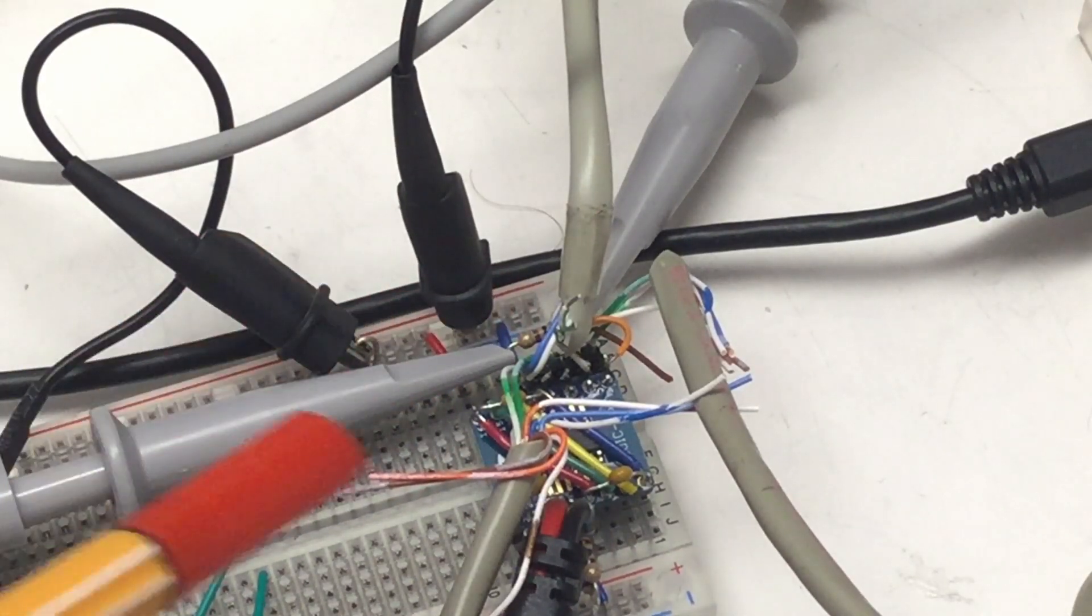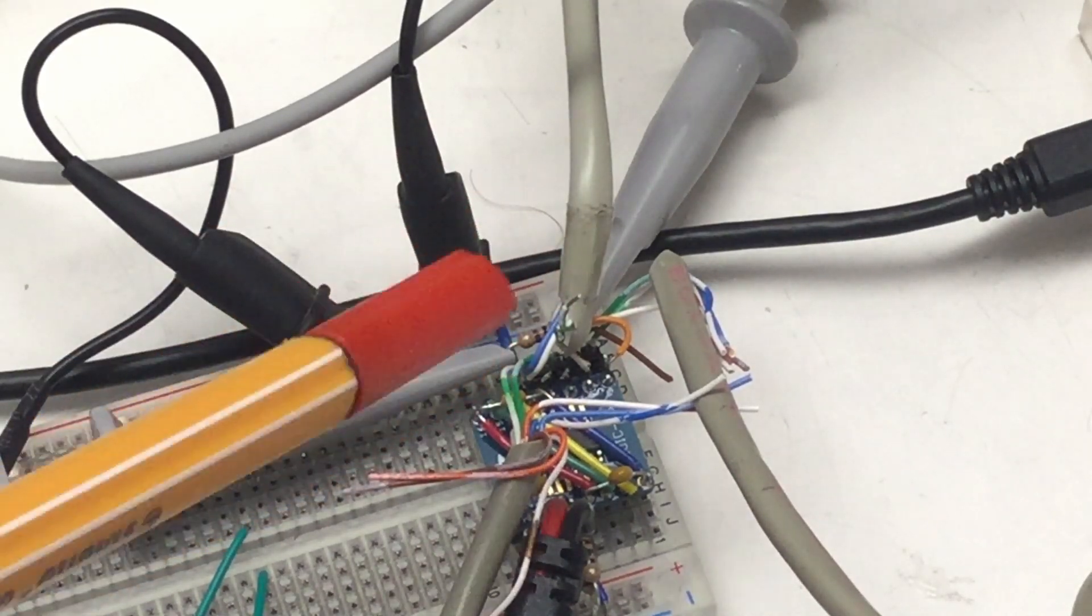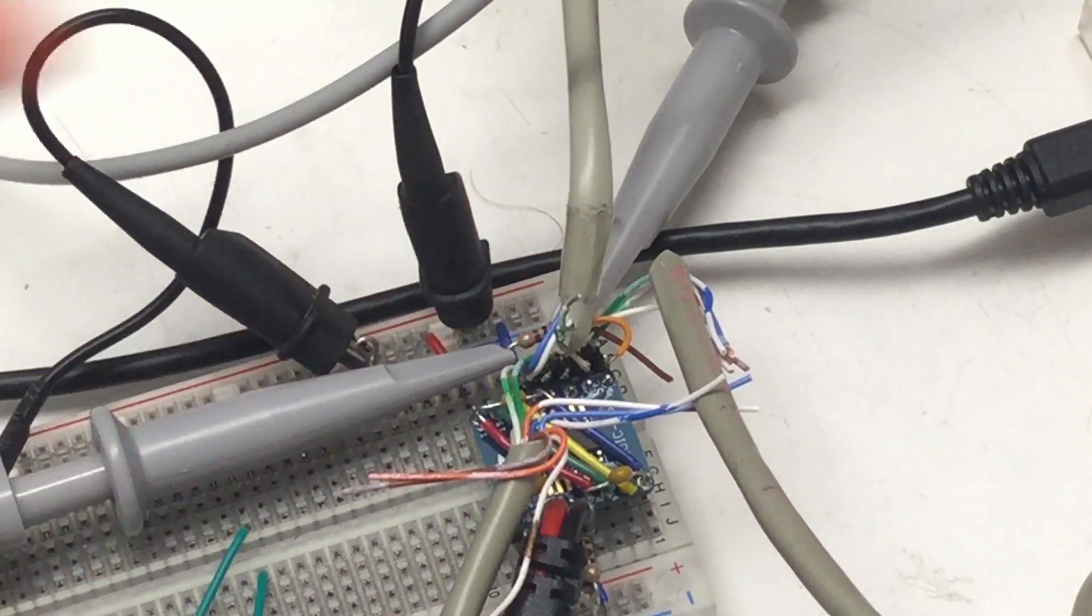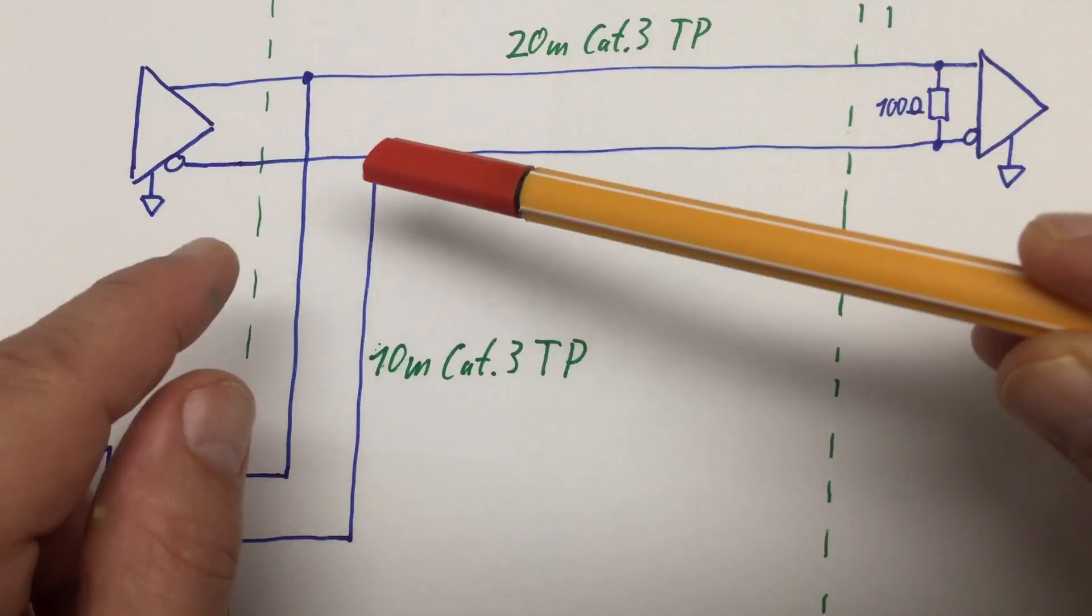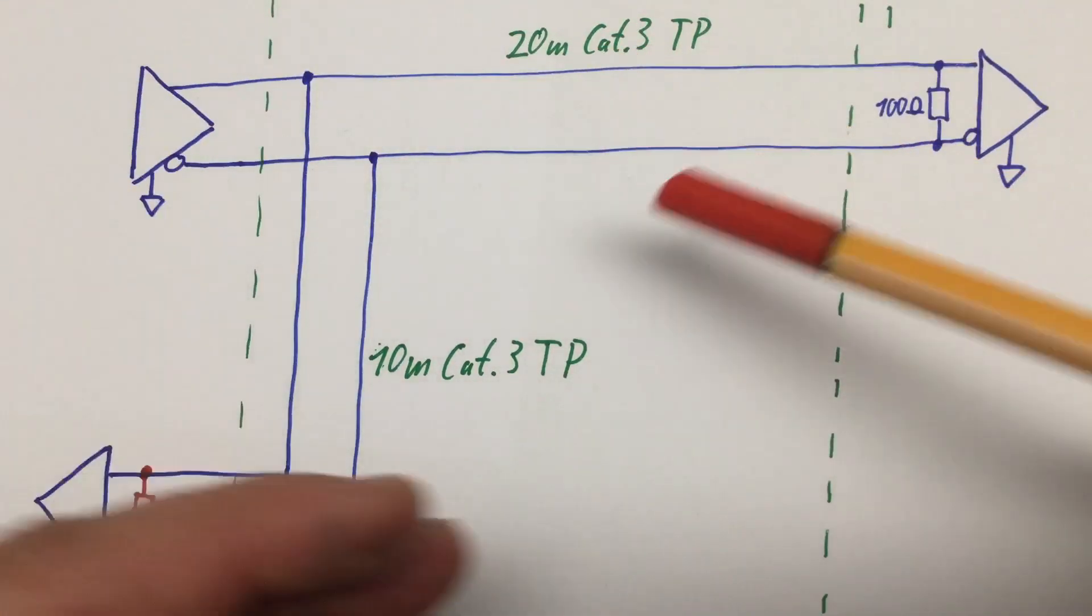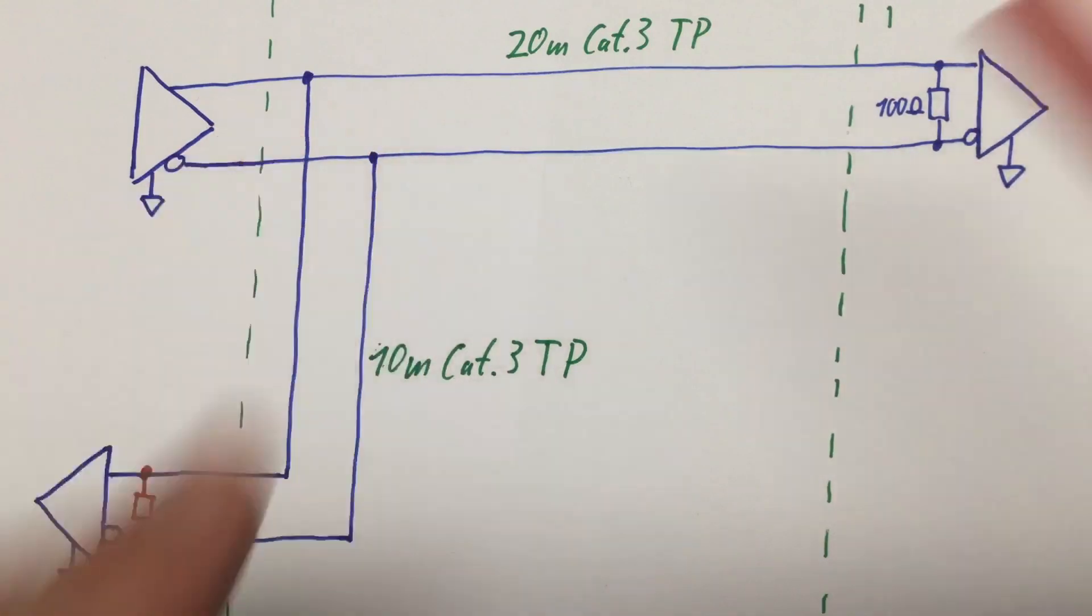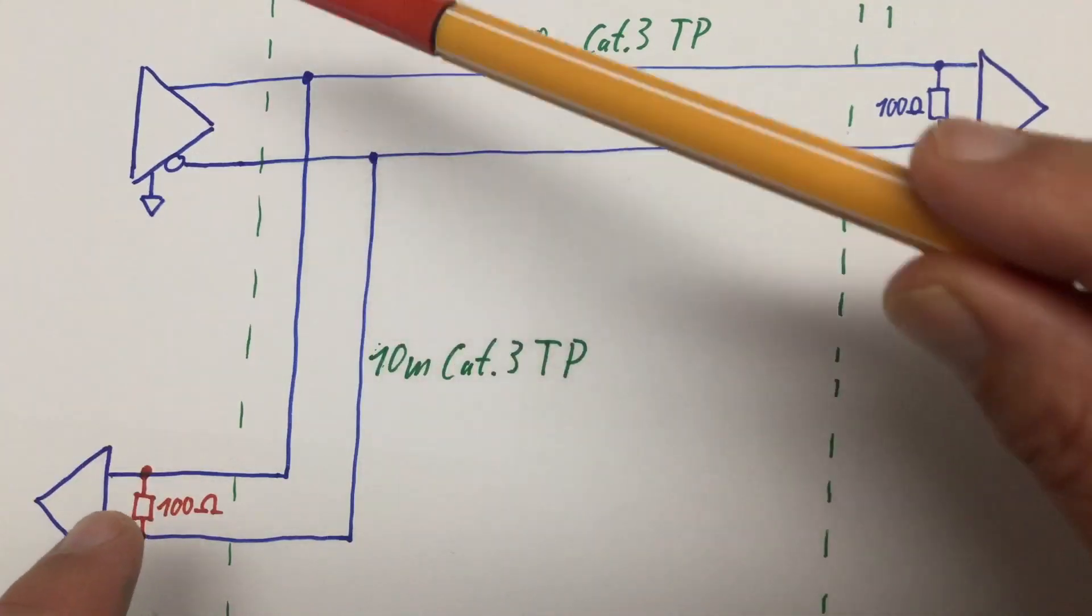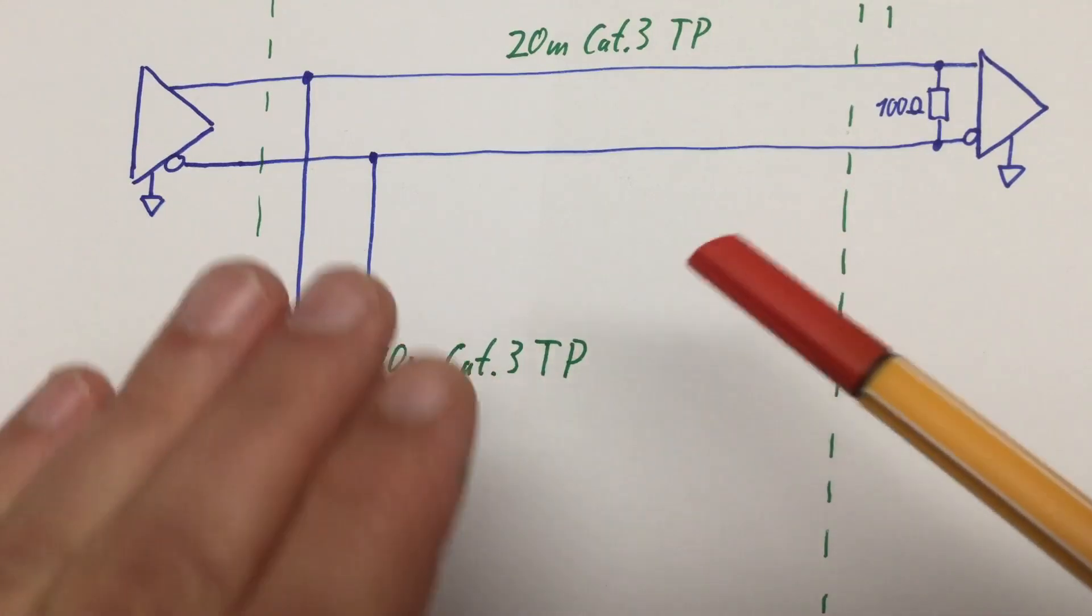But we can alleviate that problem by introducing a second termination resistor in our system here at the end of the transmission line on the left-hand side breadboard. So, obviously, the reflections coming back from here through the 10 meters of twisted pair cable into our system and the other transmission line completely messed up the signal, not only for this receiver, but also for that receiver. And here is a new 100-ohm termination resistor at the end of this length of cable. Let's see on the oscilloscope what it can do for us.